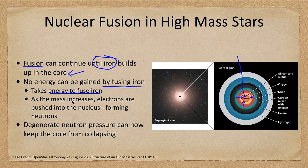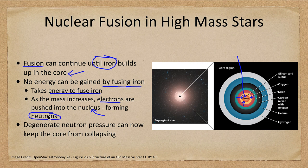Eventually the mass increases so much that it exceeds the value that electron degeneracy pressure is able to support. Those electrons become pushed into the nucleus, where each electron merges with a proton and becomes a neutron. Now we have a new form of pressure — neutron degeneracy pressure — similar to electron degeneracy, where no two neutrons can exist in the same state at the same time, and this keeps the core from collapsing.